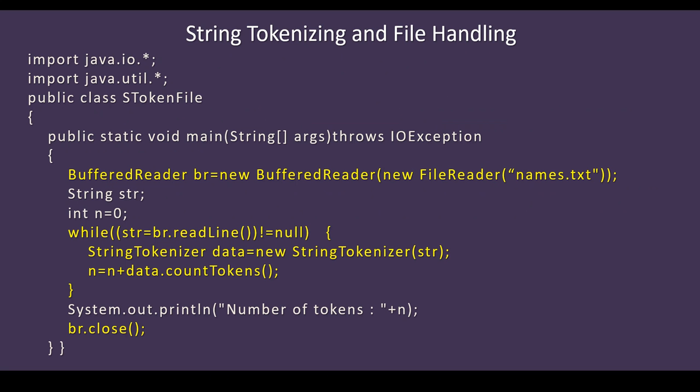The first two lines are import java.io.* and import java.util.* — both packages are included. The IO package is used for input and output statements in the program. The second one is for string tokenizer, which is available under the util package, so you have to include the util package. Next line is public class StokenFile, which creates the class name. Then you have public static void main(String args[]) throws IOException.